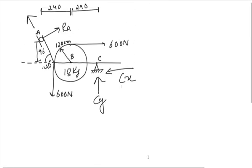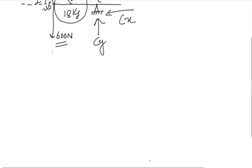So here, we have to find the reaction force at both points A and C. The tension in the string of the pulley in this direction is given 600 N. In the other direction is also 600 N. And all the distances are given in centimeters.